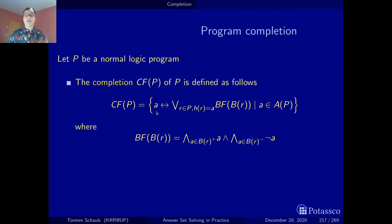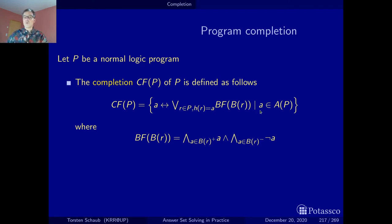This means that A is true if and only if at least one of the bodies of the rules with A in the head is true. That is what completion means. One subtlety: we work atom by atom, not rule by rule. So if an atom never appears as the head of any rule, there are no such rules and we get an empty disjunction.